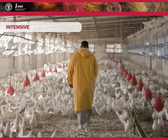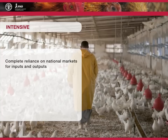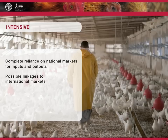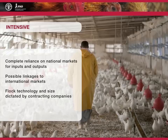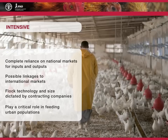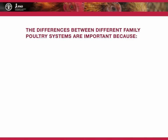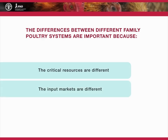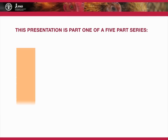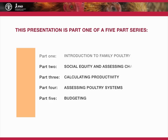Intensive production systems of small or large size rely on national markets for inputs and outputs, and there may also be additional linkages to international markets. Flock technology and size for large-scale producers are dictated by contracting companies. The large-scale production systems play a critical role in feeding urban populations, many of which are poor. The differences between family poultry systems are important because the critical resources, input markets, and output markets are all different. This introductory presentation is part one of a five-part series on The Economics of Family Poultry Production.